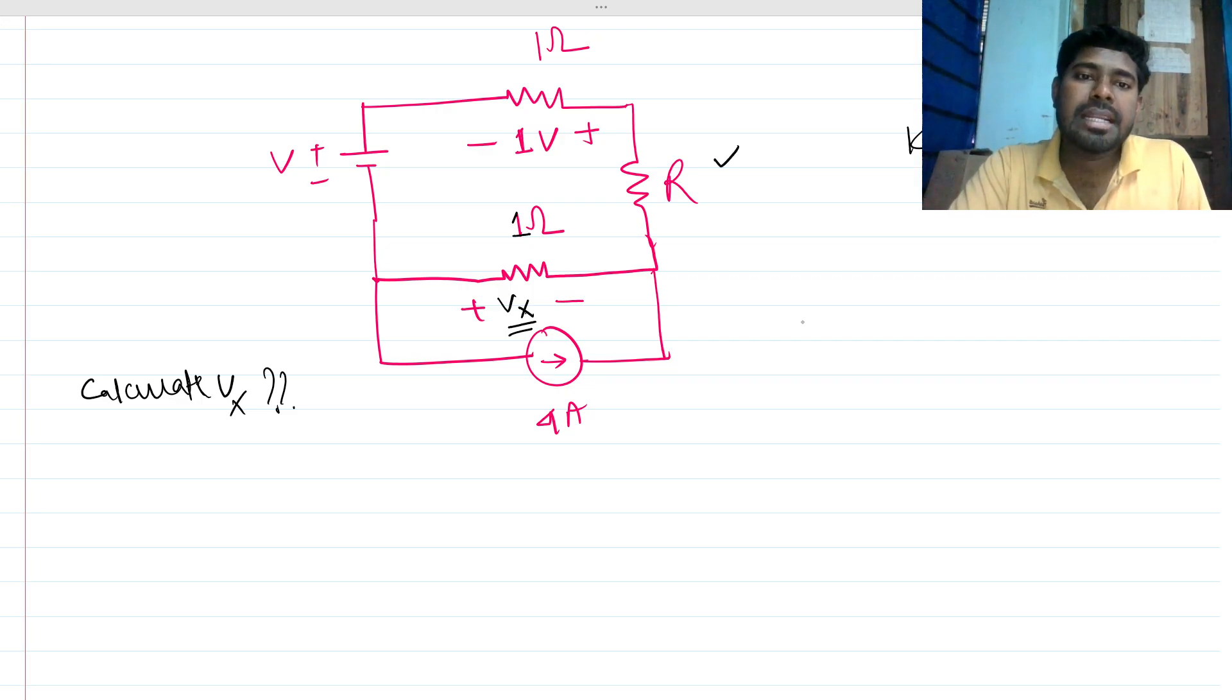Here you can see this R is not given any value and V is not given a value, so it's like - is it wrong? Is there insufficient data? Let's see.